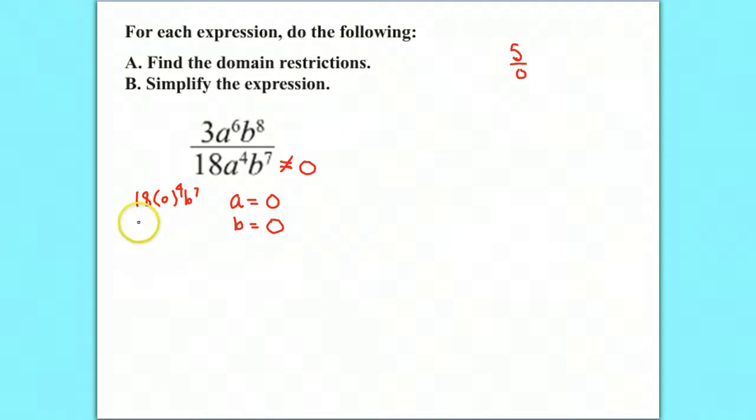And the same thing with B, we'd have 18 times A to the fourth times zero to the seventh. And again, you're still going to have zero times 18A to the fourth, which is overall zero. So your two domain restrictions for this problem would be that A cannot equal zero, and B cannot equal zero. So that's part A.